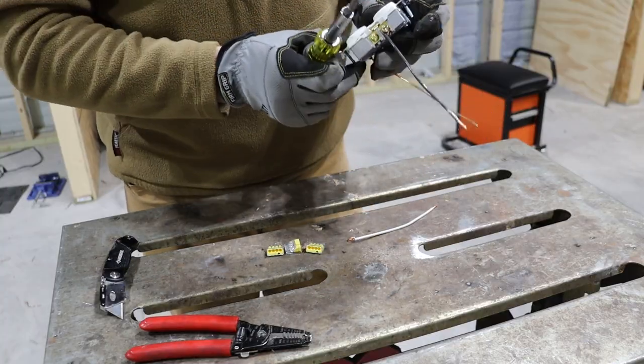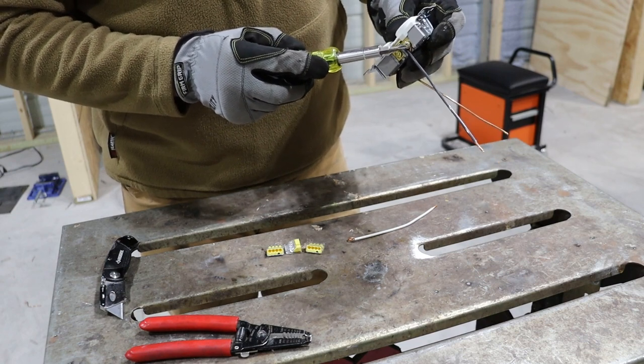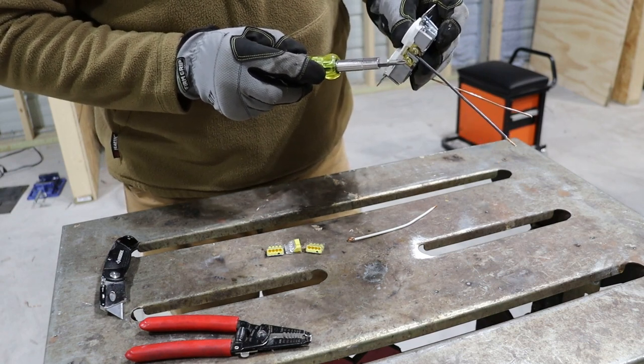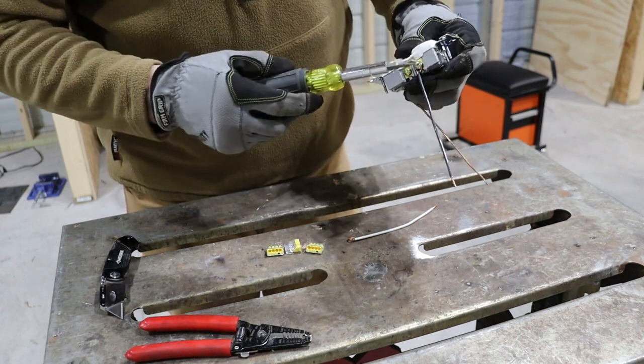Make sure that you tighten up both screws. A lot of times when I go to redo outlets, one screw will be tightened up against the wire, the other screw will just be sticking out. Get the screw tightened up so it's not just sticking out.